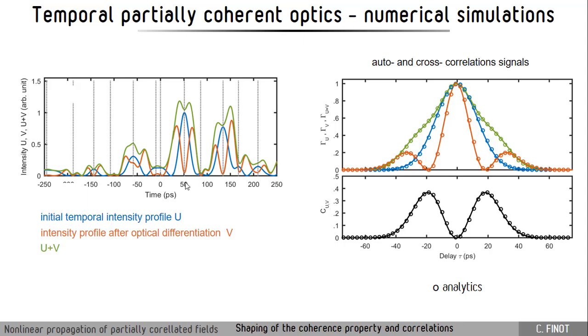To better quantify the statistical properties of the resulting field, it can be interesting to record the autocorrelation and cross-correlation signals. We have run thousands of different simulations and we see that the autocorrelation of the signal obtained after optical differentiation is very different compared to the one we had initially. We can also see that the autocorrelation of the signal that is made from the sum of the two previous signals is broader. Regarding the cross-correlation, we can note that it has a particular structure where the value of the cross-correlation is zero at the center of the pattern. All the numerical simulations here are plotted with a solid line, and we can retrieve this result analytically - these are the circles that are in perfect agreement with the numerics.